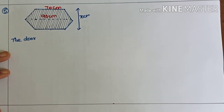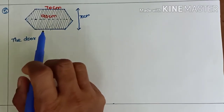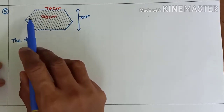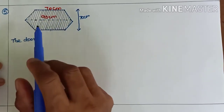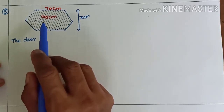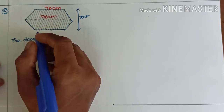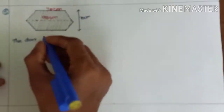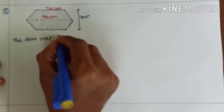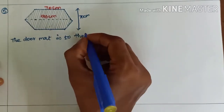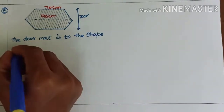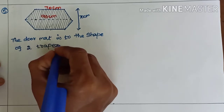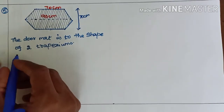Next, fifth sum: the doormat which is in the hexagonal shape has the following measures as given in the figure — find the area. The doormat is in the shape of two trapeziums joined together.